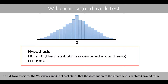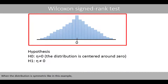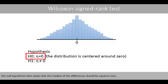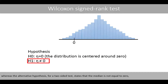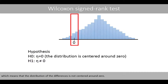The null hypothesis for the Wilcoxon Signed-Rank test states that the distribution of the differences is centered around zero. When the distribution is symmetric, the null hypothesis states that the median of the differences should be equal to zero. The alternative hypothesis for a two-sided test states that the median is not equal to zero.